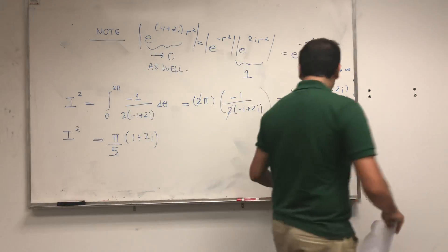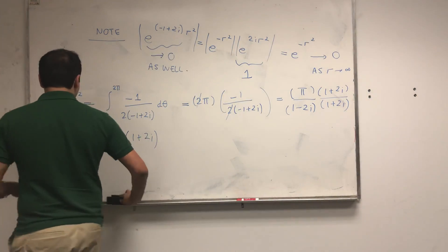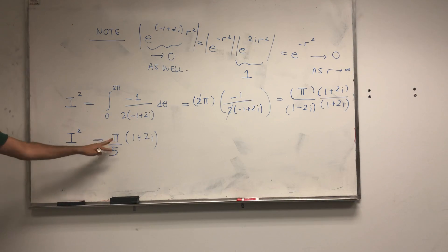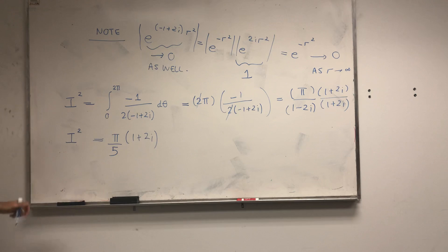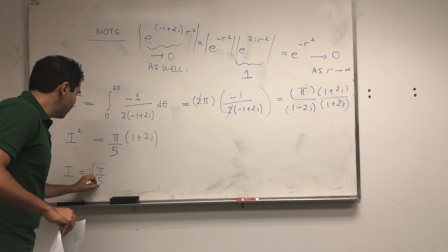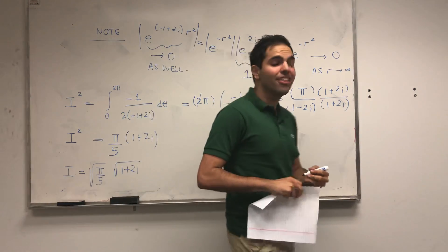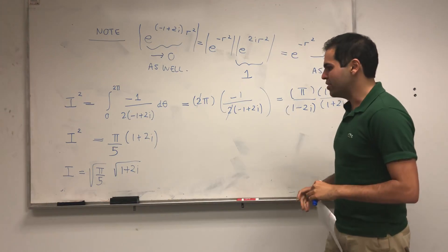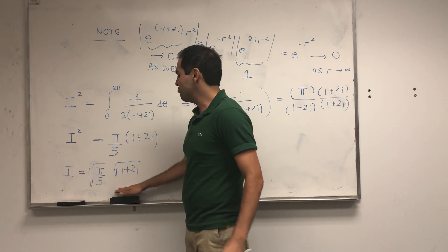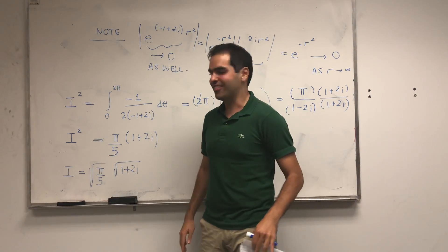Then basically we want to take square roots. This is where I'm sweeping something under the rug a little bit — what we want to do is take principal square roots. In this case the choice is plus, so let's assume that I is the square root of π over 5 times the square root of 1 plus 2i. This has to do with principal square roots in complex analysis. If you're satisfied with this answer, you can stop here and subscribe to my channel.